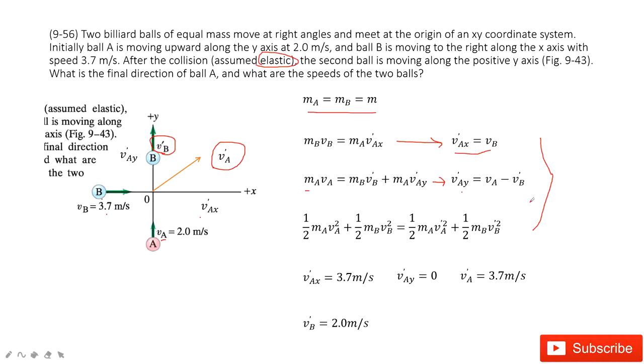We have three unknown quantities: VAx plus, VB plus, and VAy. This is very easy. The first equation tells you VAx plus equals VB, so that one is given. Then we solve these two equations and get VAy equal to zero. That makes VA plus equal to 3.7 meters per second pointing in the x direction. After you input this, because VAy is zero, this term is zero, so VB plus equals VA. Then you get the final answer.